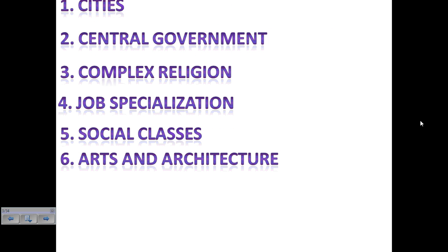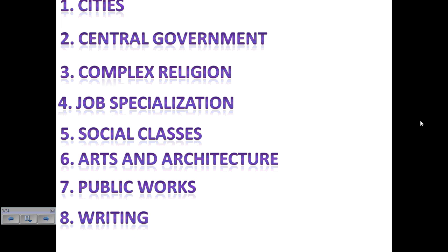The sixth major feature is arts and architecture. As civilization begins to grow, houses will become more elaborate because social classes are growing, and because of religion people will start to demonstrate their faith through the arts and early pictograms. Then we'll start to see public works, with the government providing cities with irrigation systems, walls, libraries, and schools. The last major feature — the big one — is writing. Once a civilization can write and copy things down on paper or stone, they're creating their own history, and it allows us in the present to look back at the written records they left behind.